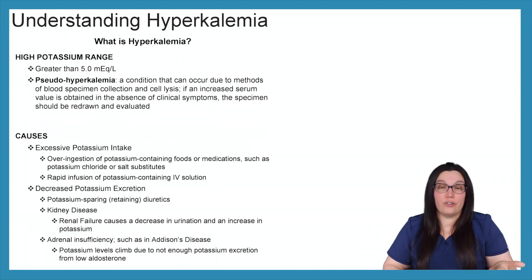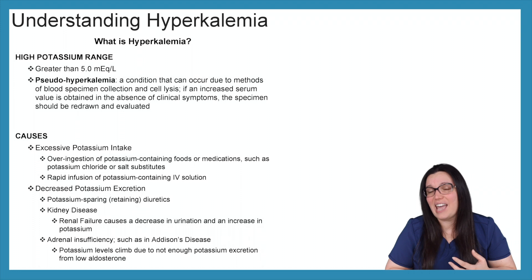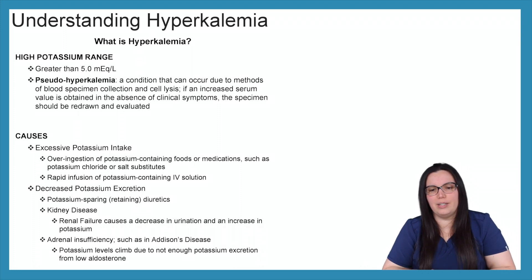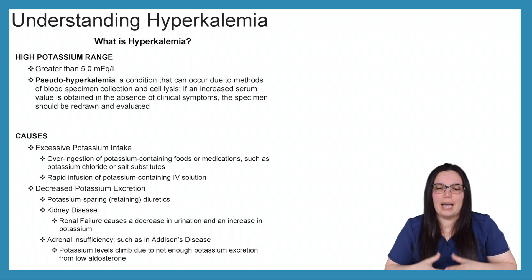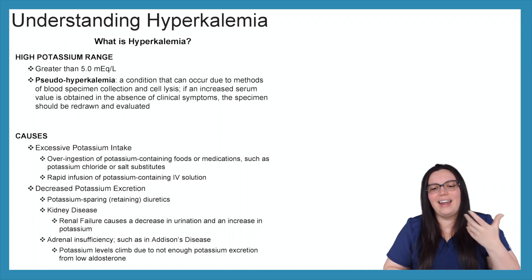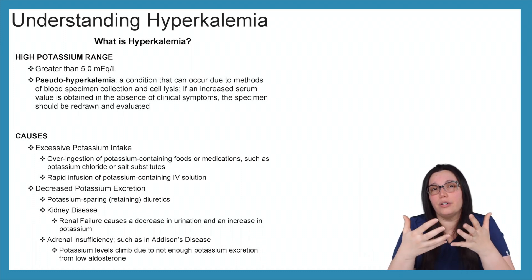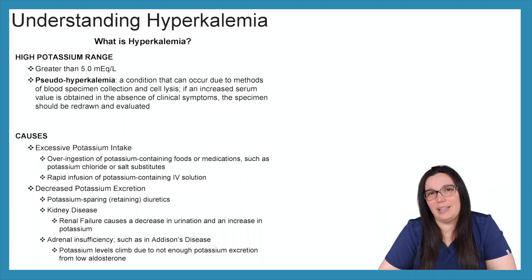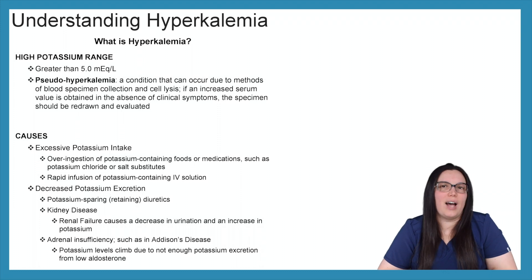Now that we know what potassium is, we need to understand what hyperkalemia is. It's high potassium in the blood — a range greater than 5 milliequivalents per liter. You can have pseudo-hyperkalemia, which is a condition that can occur due to methods of blood specimen collection and cell lysis. If an increased serum value is obtained in the absence of any other clinical symptom, I highly recommend that you redraw that specimen and reevaluate. Because if blood is drawn too quickly, these cells can burst and all of that excessive potassium can get into your lab specimen.